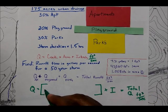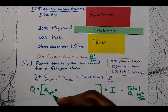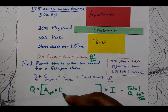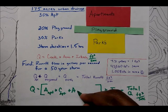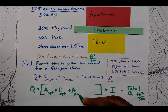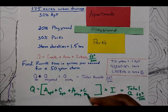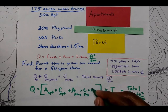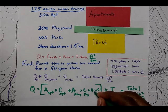I'm going to put my intensity on the outside and eventually calculate my total flow in feet cubed per second. So inside here is going to be my acreage for the apartment times the coefficient for the apartment plus the acreage for the playground times that coefficient plus the acreage times the coefficient for the park.